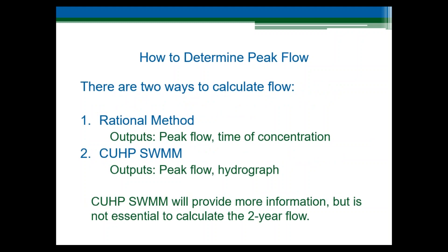There are two general methods that can be applied to calculate the two-year peak flow rate for the design of a swale: the rational method, and the Colorado Urban Hydrograph Procedure (CUHP) in conjunction with EPA's stormwater management model, SWMM. If you are only interested in the peak flow rate, the rational method is a much simpler approach. For most designs of swales in small watersheds, the rational method will be sufficient, and that is what we are going to focus on in this video.